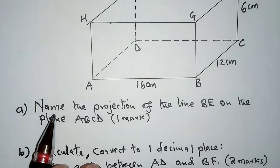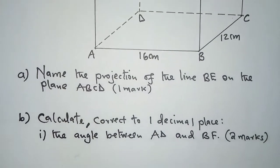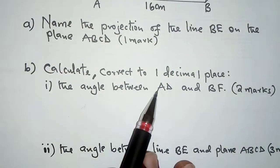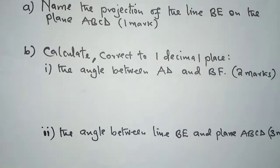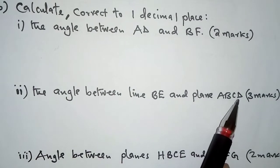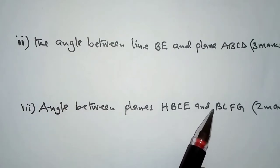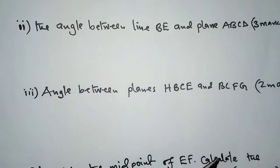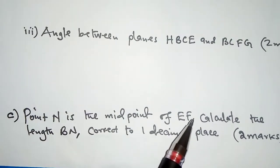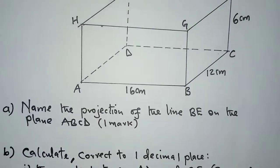Part A: name the projection of the line BE on the plane ABCD. Part B: calculate correct to one decimal place — Roman 1, the angle between AD and BF; Roman 2, the angle between line BE and plane ABCD; Roman 3, the angle between planes HBCE and BCFG. And finally, point N is the midpoint of EF — calculate the length BN correct to one decimal place.